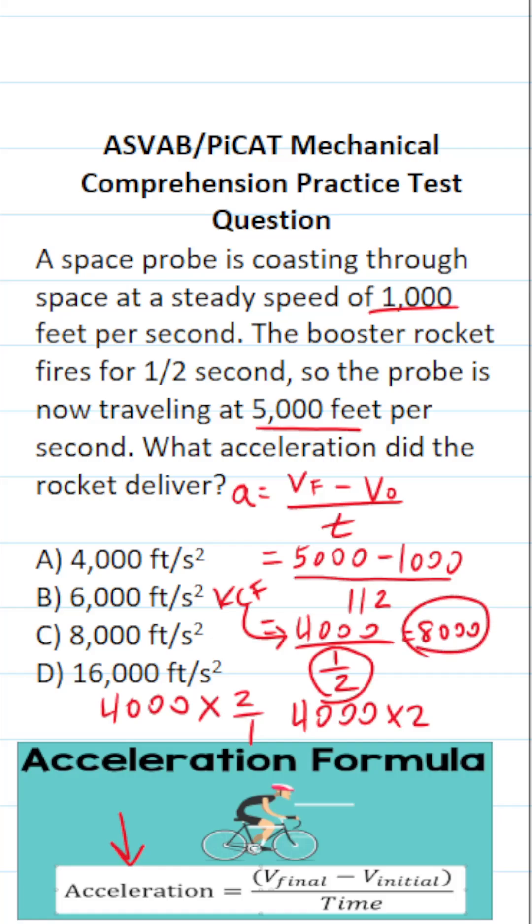this booster rocket delivered 8,000 feet per second squared of acceleration. So this one is going to be C.